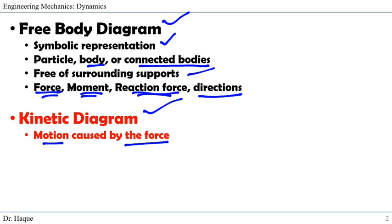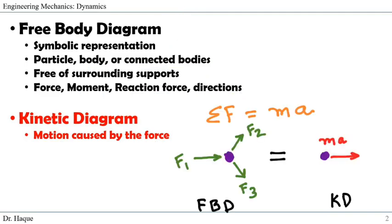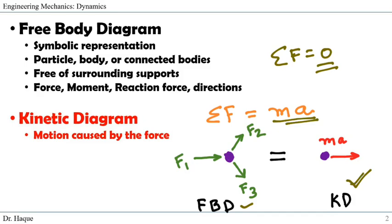The kinetic diagram shows the motions of the body. In statics we had summation of forces equals zero, so there was no kinetic diagram needed. For example, for a particle's free body diagram we would show all forces acting on it — F1, F2, and F3. Since in statics the summation of forces equals zero, we would not have any kinetic diagram. But in dynamics, summation of forces is unbalanced and equals ma, so we also need a kinetic diagram.